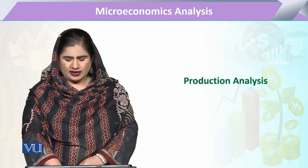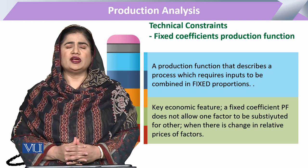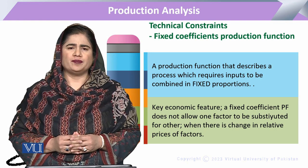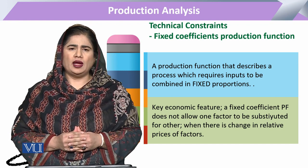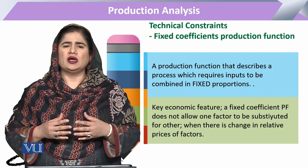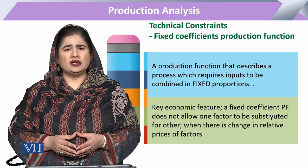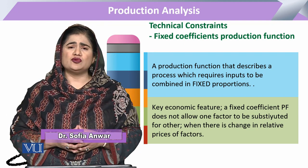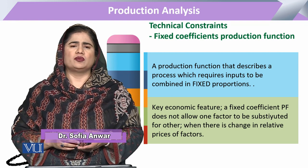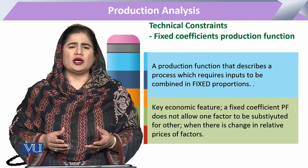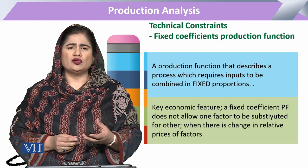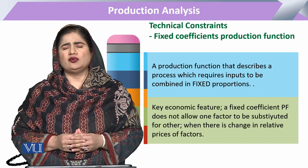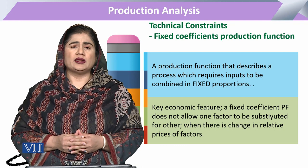Module 131 in production analysis: we are going to study the fixed coefficient production function. As we have already studied, a production function can include various types of inputs, and those inputs have various natures. There is a possibility that two or three inputs can be substituted with each other, and there is a possibility that they cannot. Due to this property of substitution, we have various types of production functions, one of which is called the fixed coefficient production function.